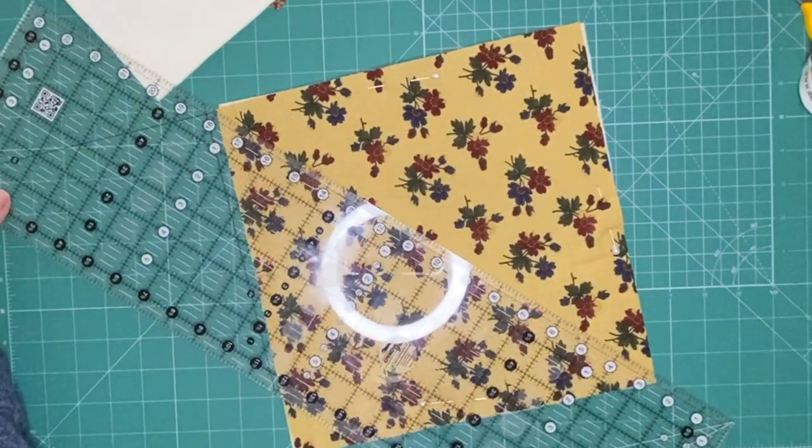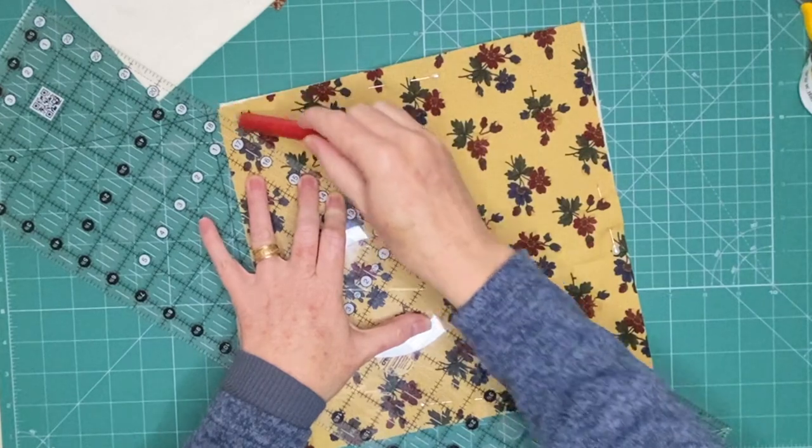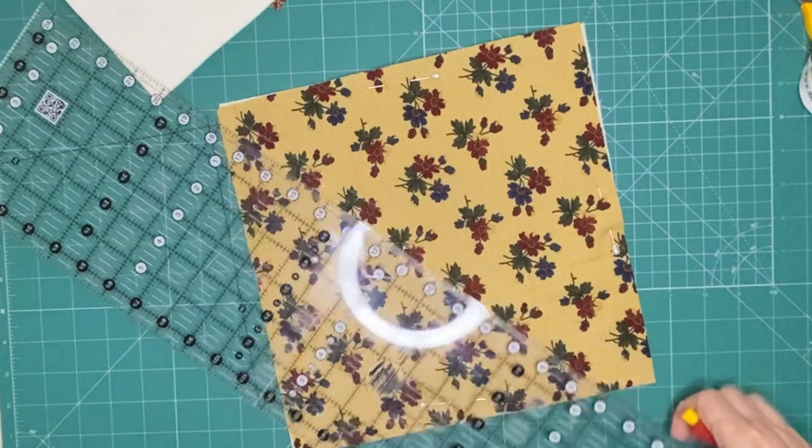Fabric is pinned to the batting. I'm now going to draw a line from corner to corner to make sure that I can stitch a straight line at my machine using my walking foot.